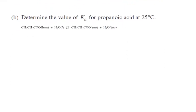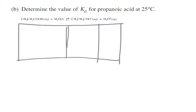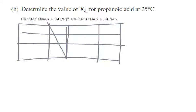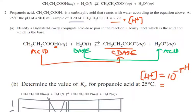Determine the value of the Ka for propionic acid at 25 degrees. What we could do here would be to go ahead and do an ICE box. Water is a liquid, so we're not going to worry about its numbers. The original acid solution is 0.2 molar, and we have that pH is 2.79. We can figure out that the H-plus concentration equals 10 to the negative pH, which gives us 1.6 times 10 to the negative 3.